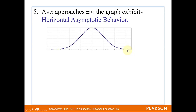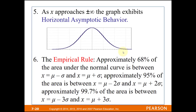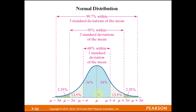Remember the empirical rule: about 68% of data falls within plus or minus one standard deviation, 95% within plus or minus two standard deviations, and 99.7% within plus or minus three standard deviations. Looking at the diagram, from minus one to plus one standard deviation you have 34% + 34% = 68%. Adding up the percentages between plus and minus two gives 95%, and between plus and minus three gives 99.7%. The main takeaway is the 68-95-99.7 rule.